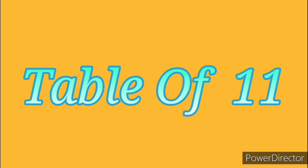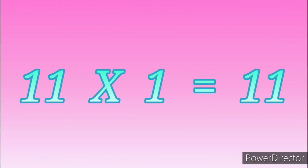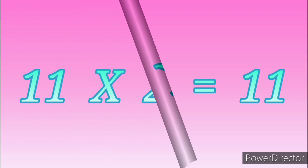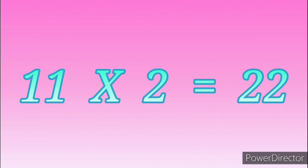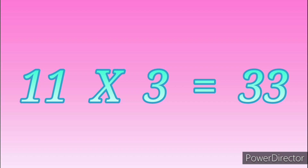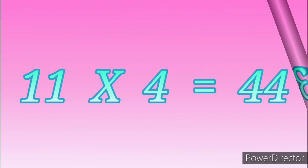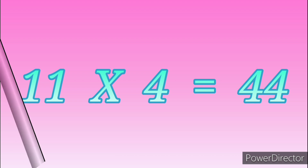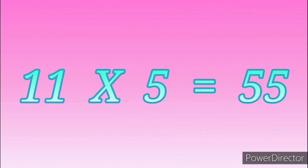Table of Eleven. Eleven ones are eleven. Eleven twos are twenty-two. Eleven threes are thirty-three. Eleven fours are forty-four. Eleven fives are fifty-five.